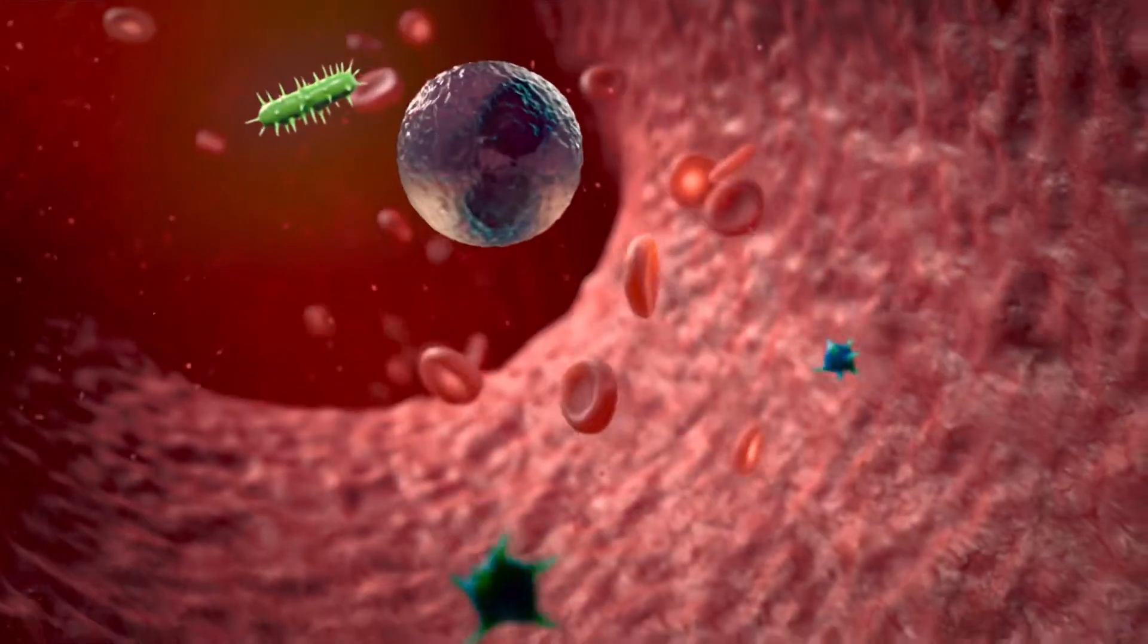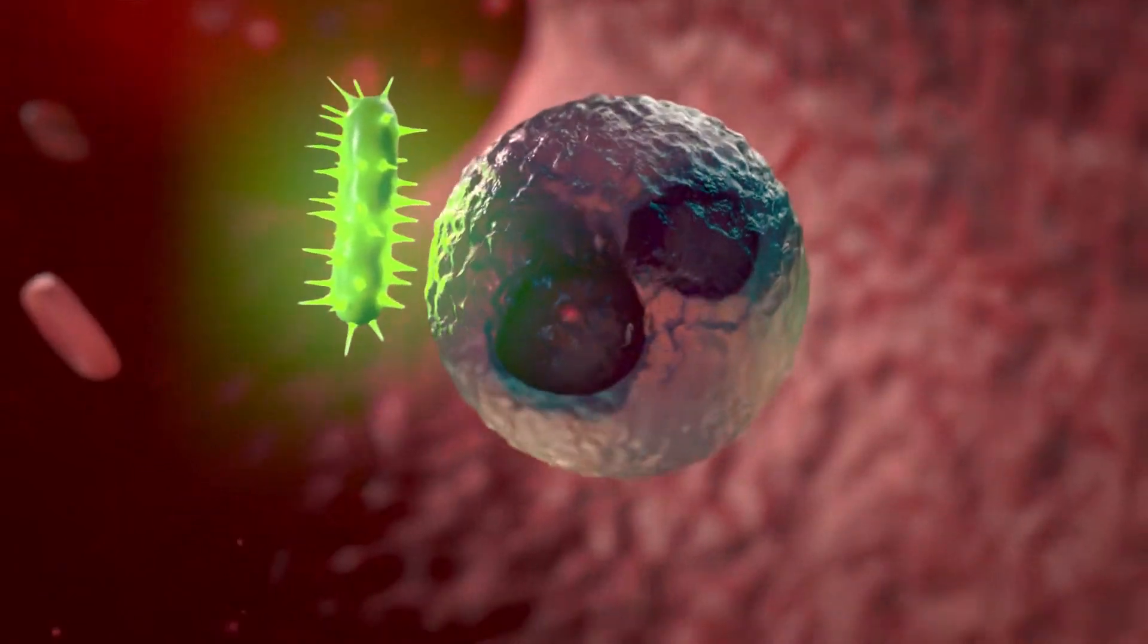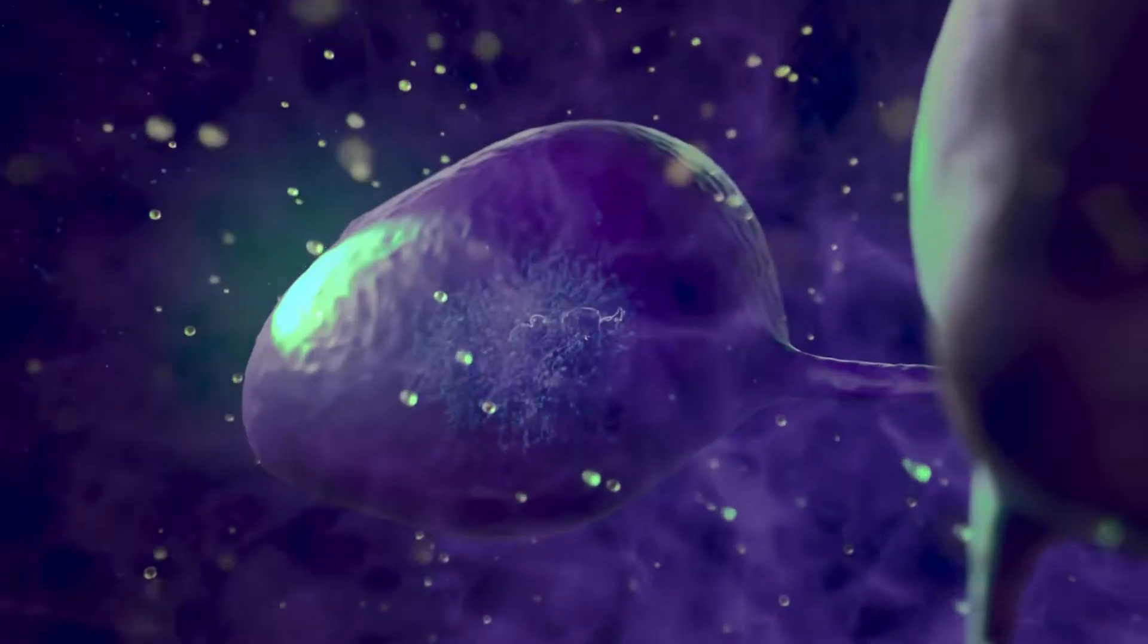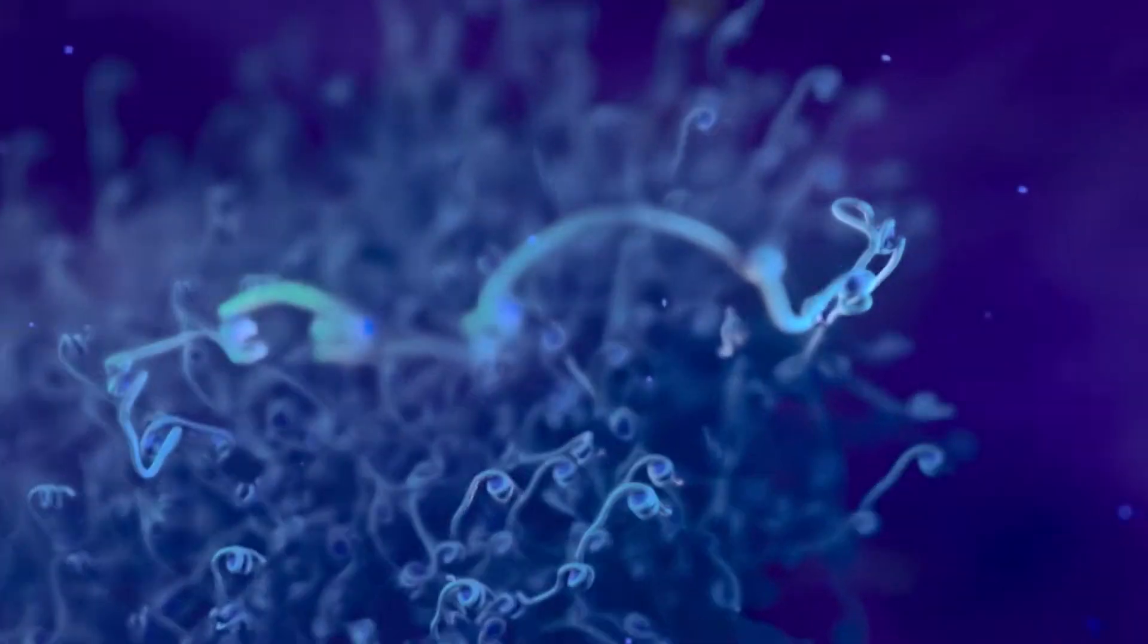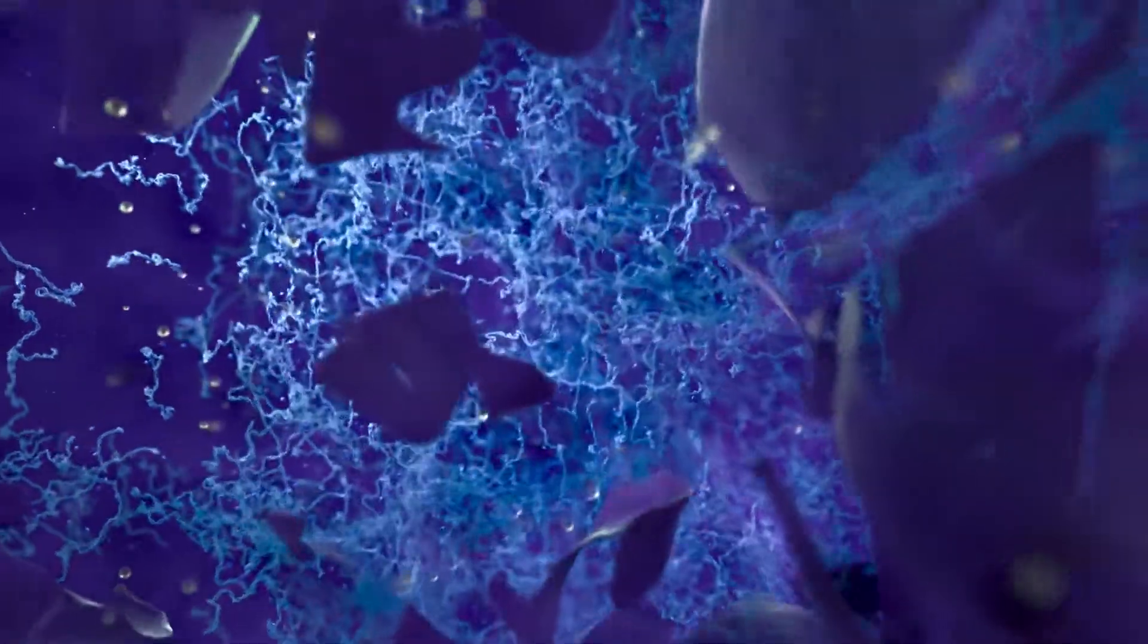During infection, neutrophils are the first cells recruited to the site of infection to phagocytose the invaders. Neutrophils release their own DNA into the bloodstream, forming dense web-like structures known as neutrophil extracellular traps or NETs.